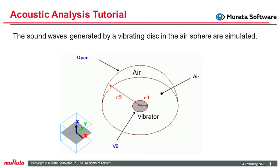The sound waves generated by a vibrating disc in the air sphere are simulated. The disc is placed on the XY plane. The side facing the positive Z direction vibrates the upper side of the air sphere, and the other side facing the negative Z direction vibrates the lower air sphere. As the model is symmetric over the XY plane, a half model is created and analyzed.